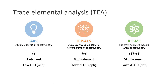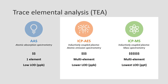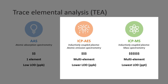In terms of detection limit, both AAS and ICP-AES have low detection limits in the PPB region, while ICP-MS has a detection limit in the PPT region, which is the lowest among the three. So far, it seems that ICP-AES and ICP-MS are better choices for our purpose here.